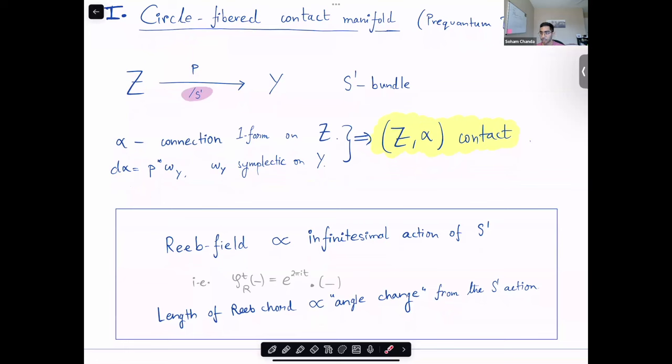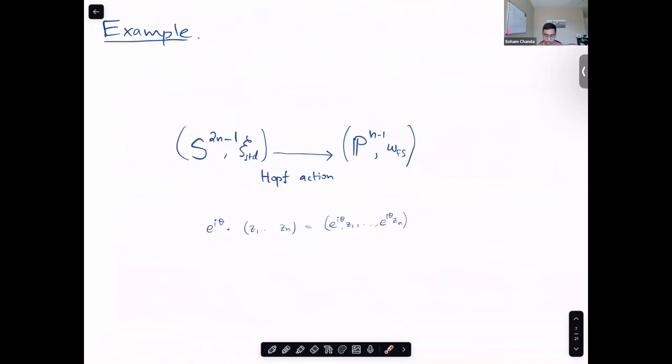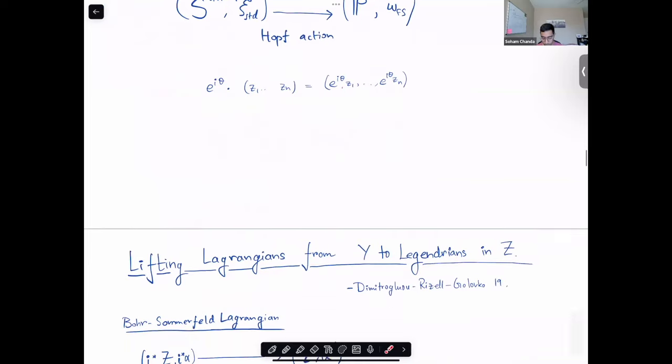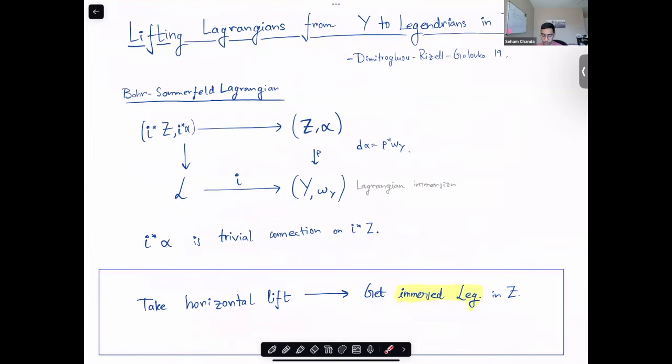And you can check that in this situation, the Reeb flow is exactly given by an application of the circle action. In particular, for flow of time t, you just multiply it with e to the 2πit. The example you should keep in your mind is the odd contact sphere over the projective space. This is a circle bundle by quotienting out with the Hopf action on the odd contact sphere where I use complex coefficients. Here, the Hopf action is just multiplying each by the same angle.